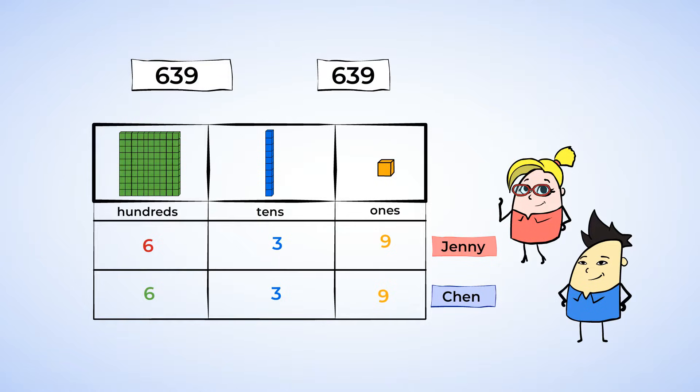All the digits are the same, and that means those numbers are the same. Neither one is greater than or less than the other. Jenny's score and Chen's score are equal. You can show this with an equal sign. 639 is, after all, equal to 639.